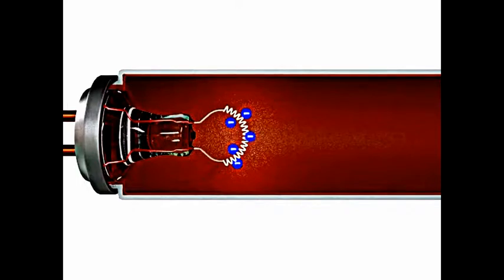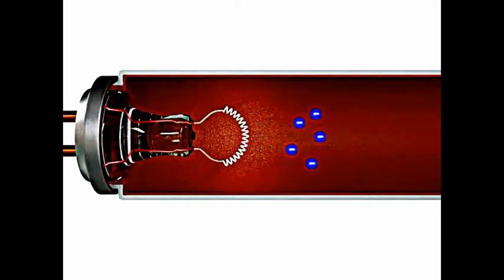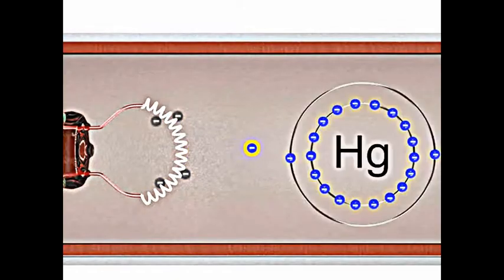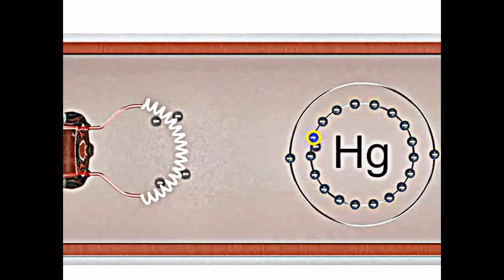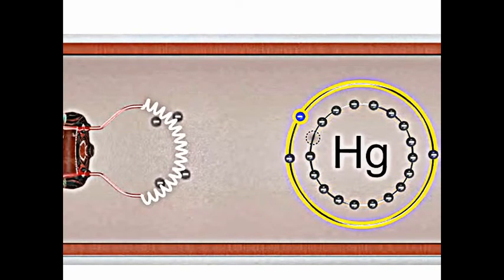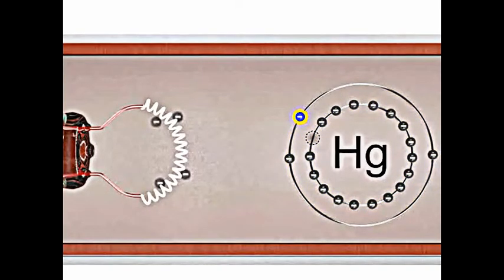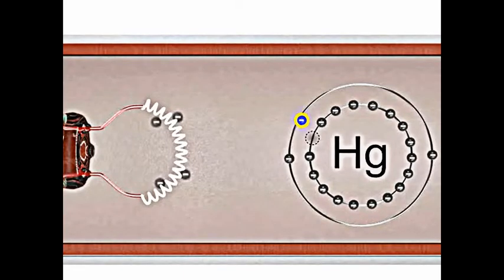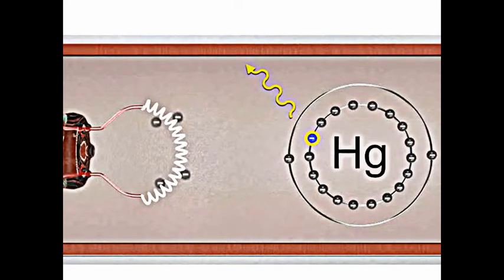An AC voltage pulse, supplied by a starter, pushes the electrons from one end of the tube to the other. If one of the free electrons collides with an electron of the mercury vapor, the electron is bumped from a lower to a higher energy level. The electron quickly returns to its lower energy state and in the process releases an ultraviolet photon.